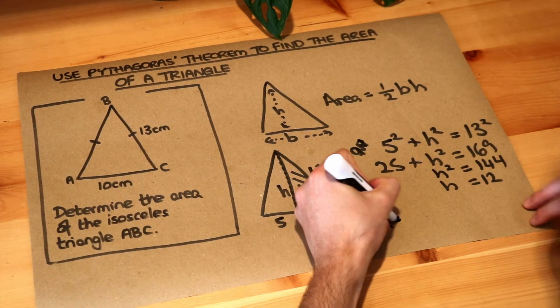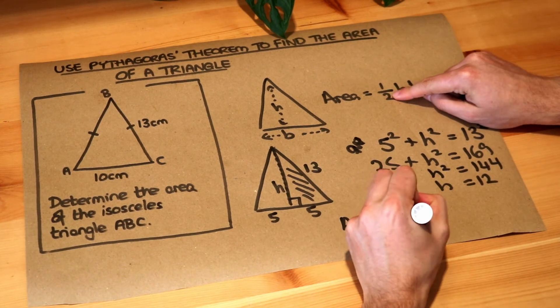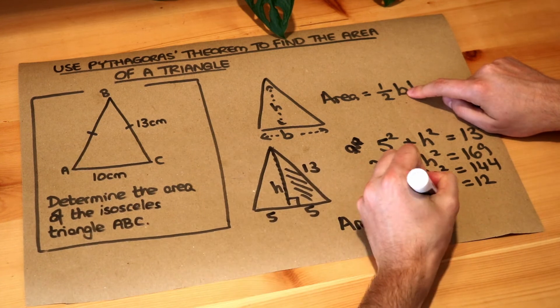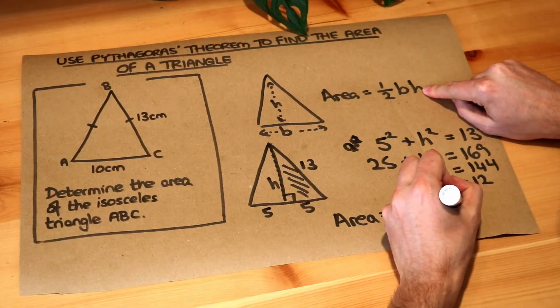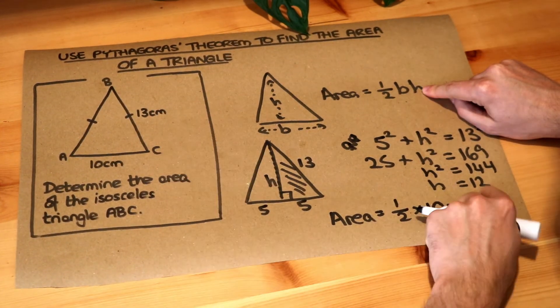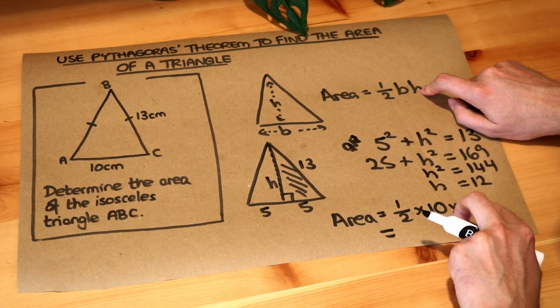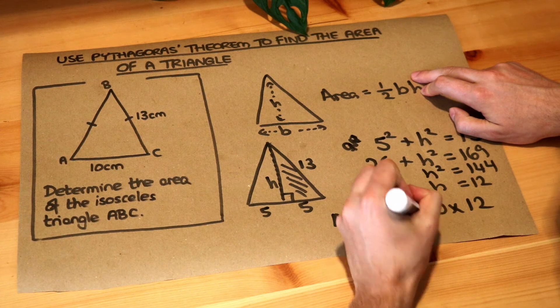Using the formula, the area is half multiplied by the base, which was 10, multiplied by the height, which is 12. Half times 10 is 5, 5 times 12 is 60, so the answer is 60.